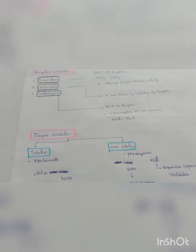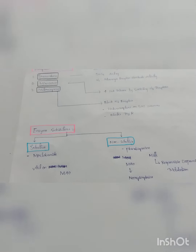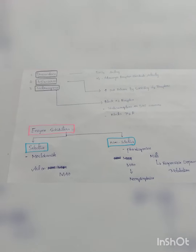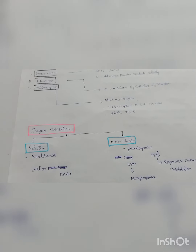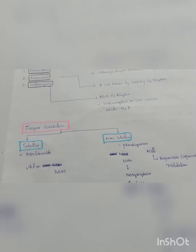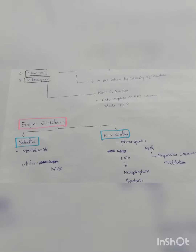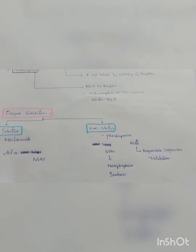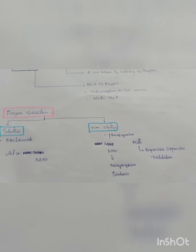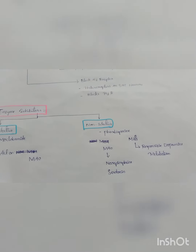Moving on to the third group — enzyme inhibitors — which are divided into selective and non-selective. The selective ones act on MAO-A enzyme; we have moclobemide. The non-selective ones act on both MAO-A and MAO-B; the drug is phenelzine. MAO-A is responsible for norepinephrine and serotonin metabolism, whereas MAO-B is responsible for dopamine metabolism.